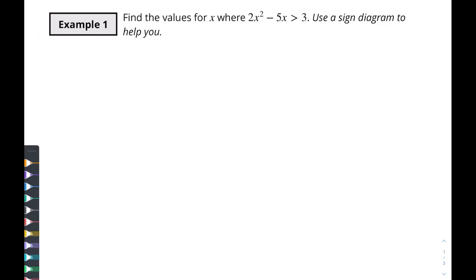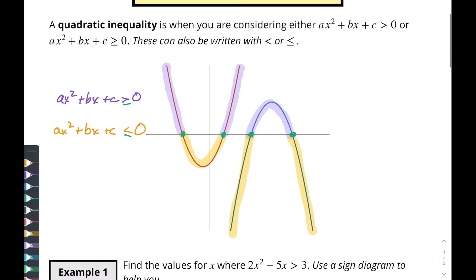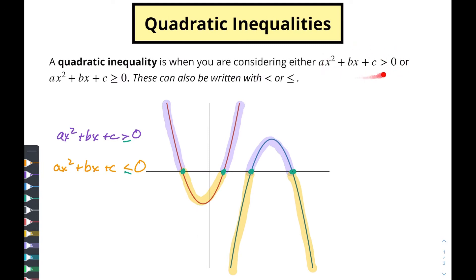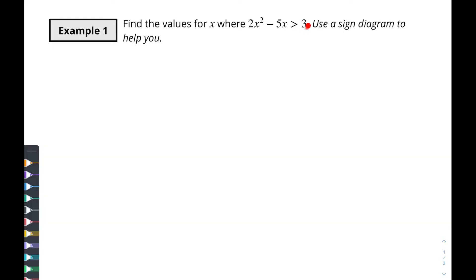Let's look at a couple of examples and put this into action. Our first example: find the values for x where 2x squared minus 5x is greater than three. Use a sign diagram to help you out. Really what we're trying to do — since all of these things are expressed as greater than zero or less than zero — is just like when you're working with the quadratic formula: we're going to get the whole thing equal to zero. Let's start by subtracting three and bringing it over to this side of the inequality: 2x squared minus 5x minus 3 is greater than zero.